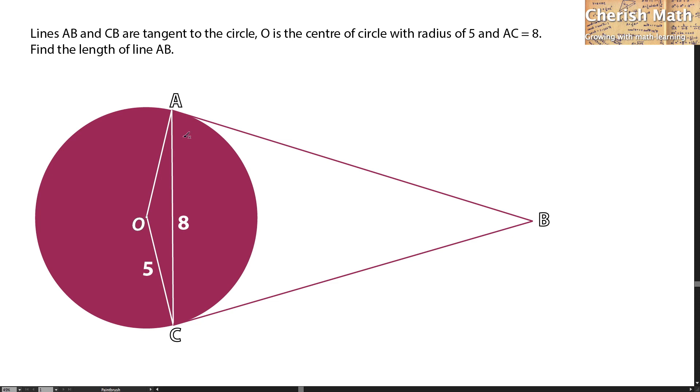Since the line AB is a tangent to the circle, the tangent is going to form a right angle with the radius OA. And the same thing happens at this part as well.